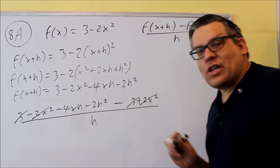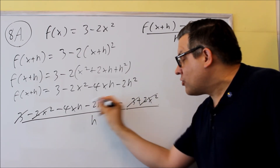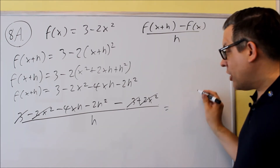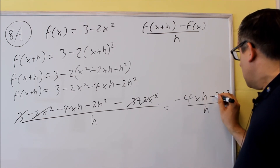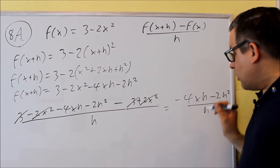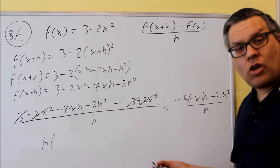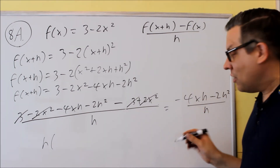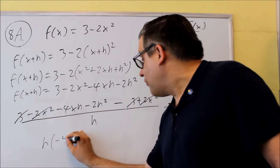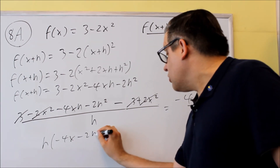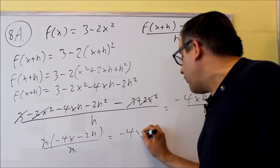I should be left with something that has an h in it. If I don't have an h in all my terms left over, go back and check your work, because you should only have terms with h left over. The 3 and negative 3 cancel out, and negative 2x squared and 2x squared cancel out, leaving me with negative 4xh minus 2h squared, all over h. So next I'm going to factor out an h from the top so I can cancel it with the h on the bottom. That gives me negative 4x minus 2h, and the h's cancel, so the answer is negative 4x minus 2h.